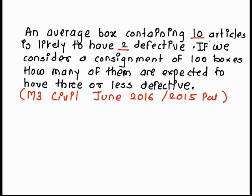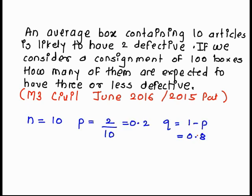We get n equals 10, probability 2 by 10, 2 is defective out of 10, so 0.2. q is equal to 1 minus p, that is 0.8.